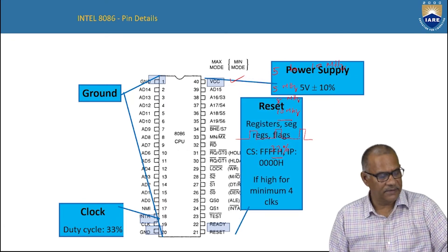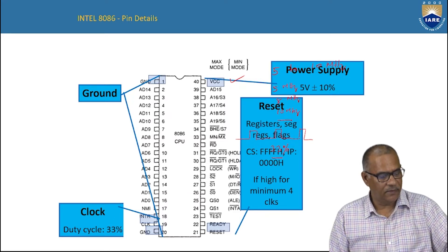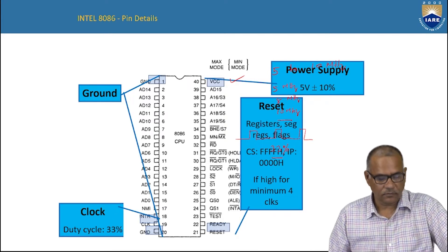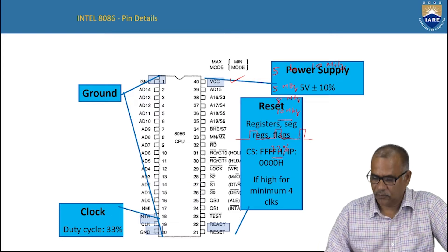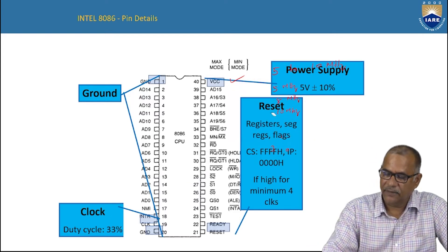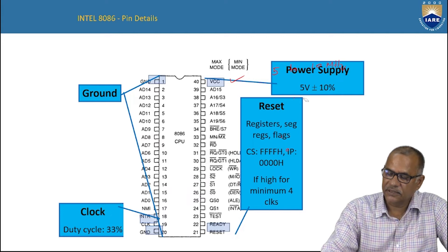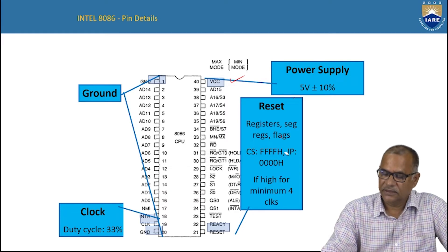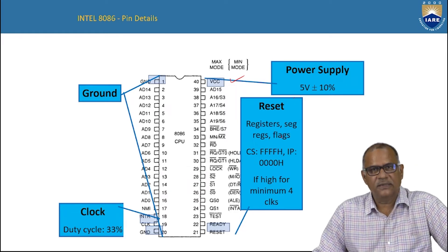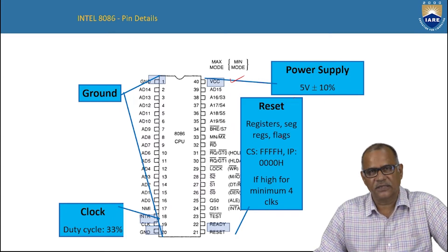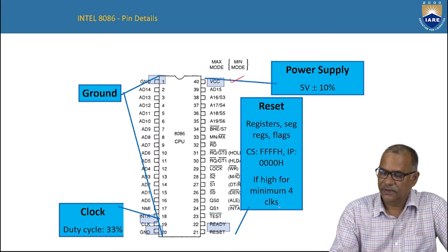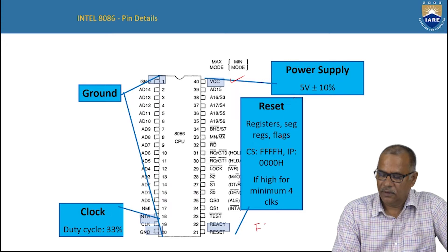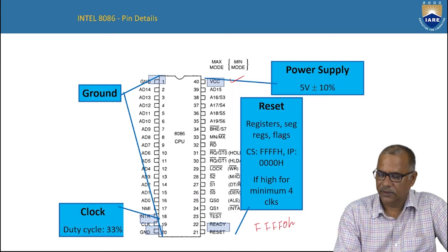Next, we have the pins reset and ready. When you give reset, the processor terminates its current activity and starts fetching instructions from a predefined memory location. When you press reset, the registers are initialized to default values and the processor starts fetching instructions from memory location FFFF0H.